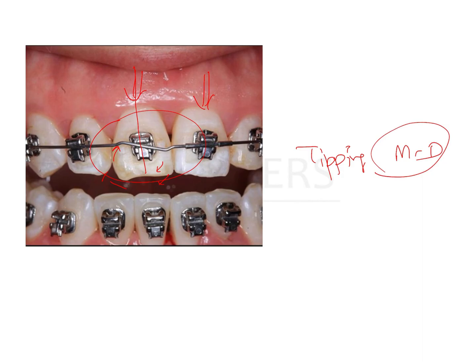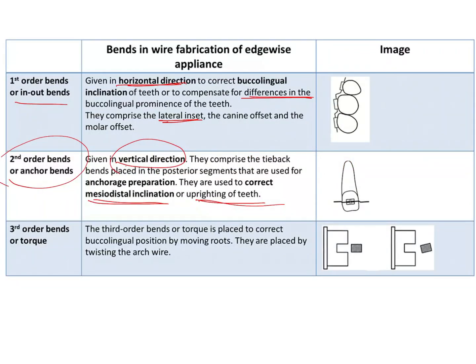So second order bends are very versatile and have various different names: anchor bends, tip-back bends, V bends, artistic positioning bends, etc. They are all given in the vertical direction.